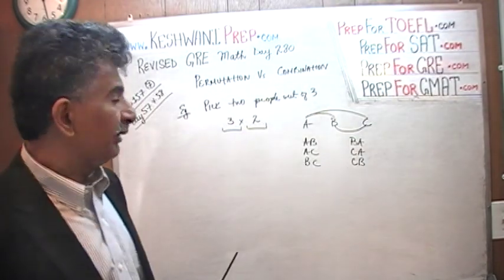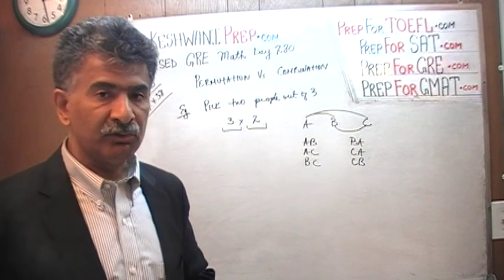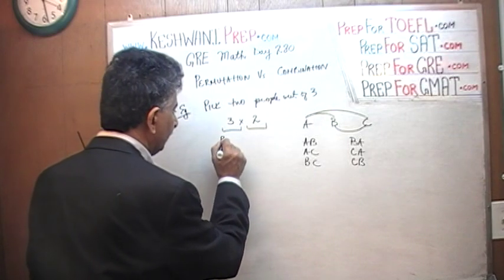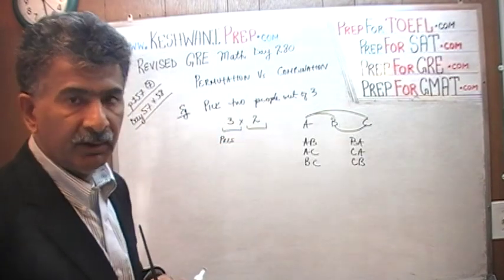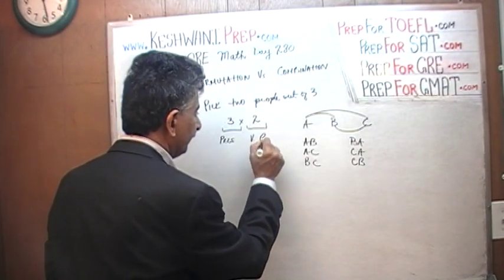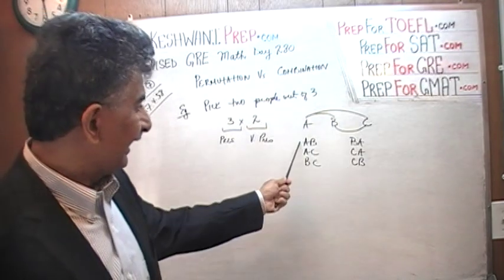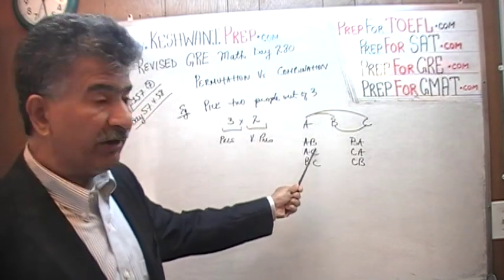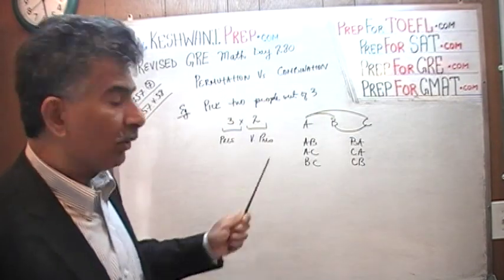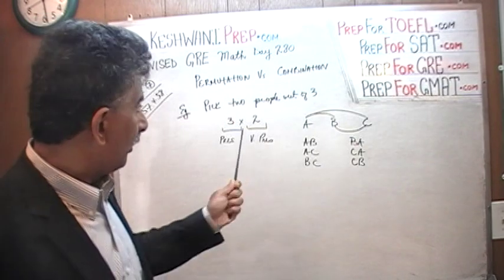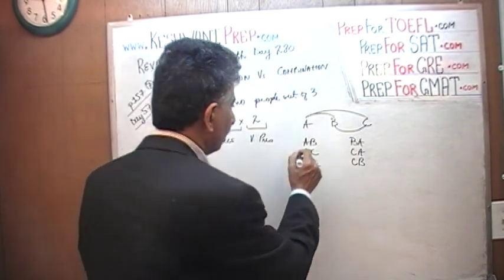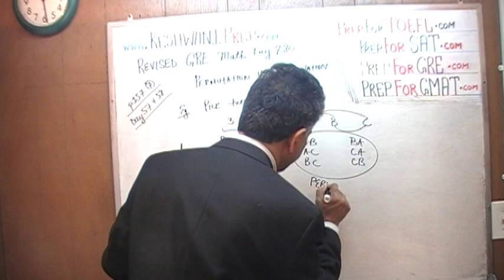As this question was phrased — pick two people out of three — it was a little ambiguous. It doesn't clarify what we are dealing with. For example, if the first person happens to be for the position of president and we have to pick a president and a vice-president out of three people, then of course order does matter. Picking A as president and B as vice-president is different from picking B as president and A as vice-president. When order matters, what we are dealing with is what is known as permutations.